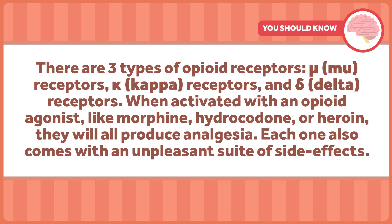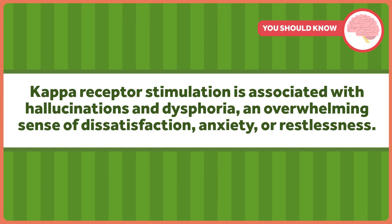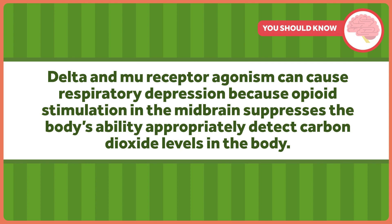There are three types of opioid receptors: mu receptors, kappa receptors, and delta receptors. When activated with an opioid agonist — like morphine, hydrocodone, or heroin — they all produce analgesia, but each comes with an unpleasant suite of side effects. Kappa receptor stimulation is associated with hallucinations, dysphoria — an overwhelming sense of dissatisfaction — anxiety, and restlessness. Delta and mu receptor agonism can cause respiratory depression because opioid stimulation in the midbrain suppresses the body's ability to detect carbon dioxide levels, which can cause a person to simply stop breathing. Other side effects include sedation, urinary retention, nausea, vomiting, dizziness, and really bad constipation.